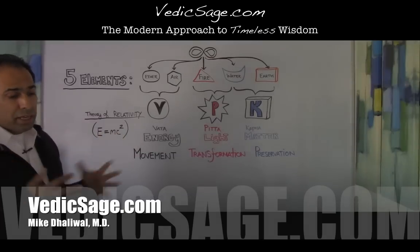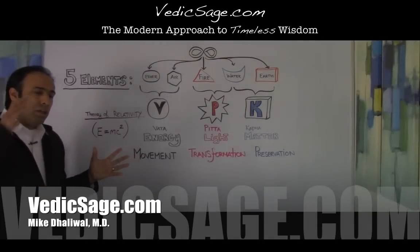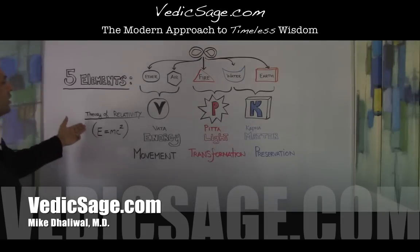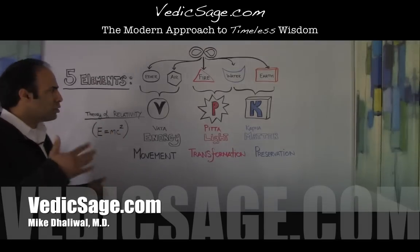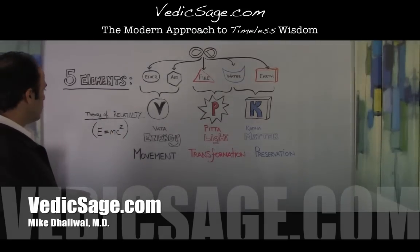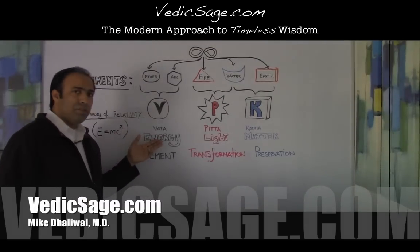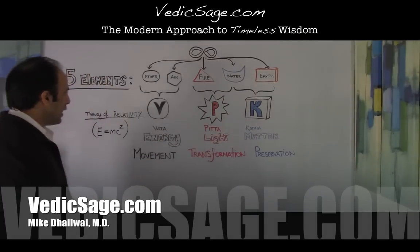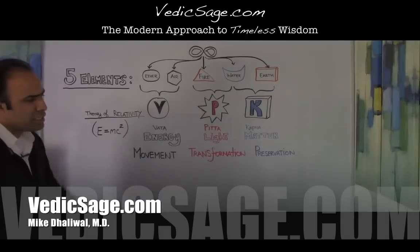Nearly five thousand years ago, these wise sages of the land pretty much documented the theory of relativity — E=mc²: energy equals mass times the speed of light squared. Here we have the expression of energy, we have light and matter. Now how can we use these qualities